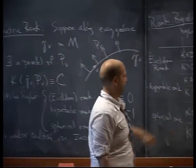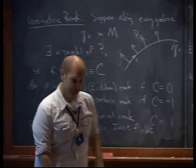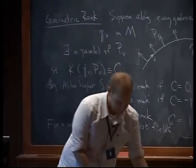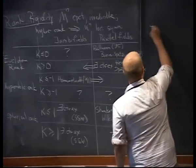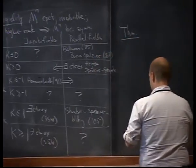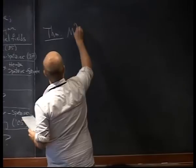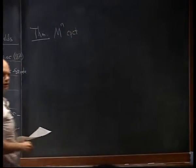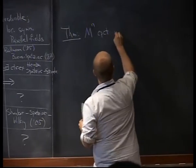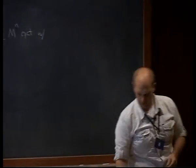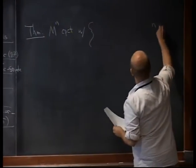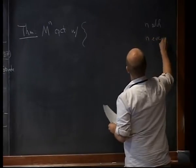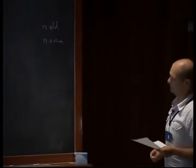I'm going to talk about a result that touches on this situation. The theorem is the following: M is an n-dimensional compact manifold which satisfies certain curvature conditions. We have two different cases depending on whether the dimension n is odd or even — I'll explain later why this comes into play.